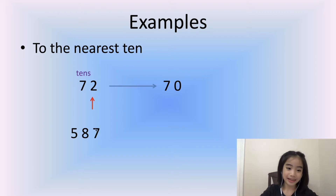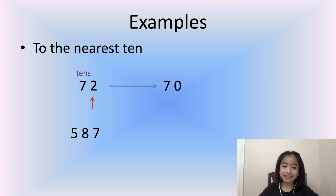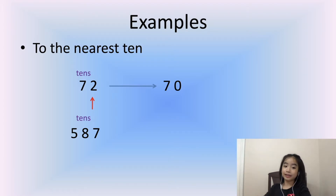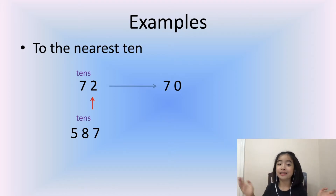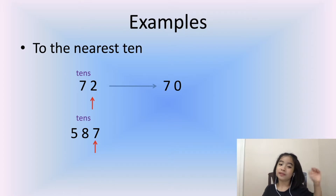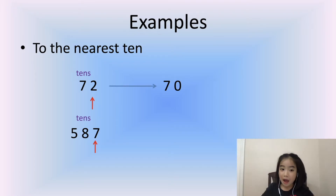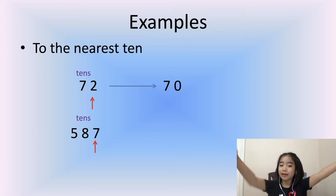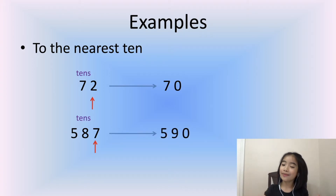Now let's look at this example: 587. The 8 is in the tens position, and the digit to the right — in the ones position — is 7. Since 7 is in the range 5–9, we round up to 590.